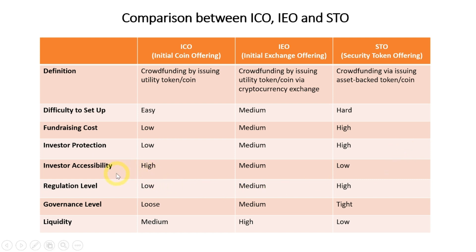In terms of accessibility, ICO is the highest because it has fewer processes and less red tape, so any investor could easily invest in an ICO. However, IEO may not be as easy because it generally requires a KYC process, as most crypto exchanges require KYC. STO is the most difficult because it is highly regulated — it has a lot of terms and conditions on who can invest, which are tied to the securities regulations of the country.